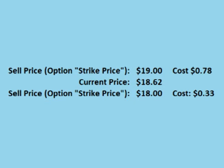Notice that the trader locks in the right to sell the stock for $19, but the stock is currently trading at only $18.62 per share. Therefore, the trader locks in the right to sell the stock for a price that is $0.38 a share higher than it is currently trading for. However, he paid more up front — $0.78 per share for this option, versus $0.33 per share for the $18 option. He pays $0.45 per share more up front, but if the price of SLV drops, he has locked in the right to sell it for $1 per share higher.